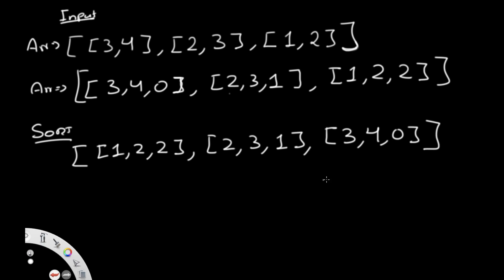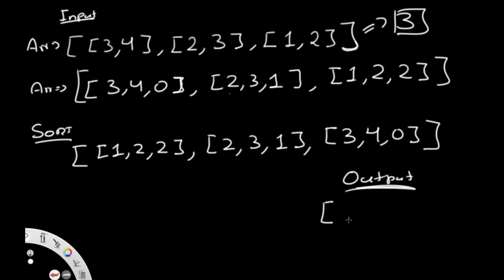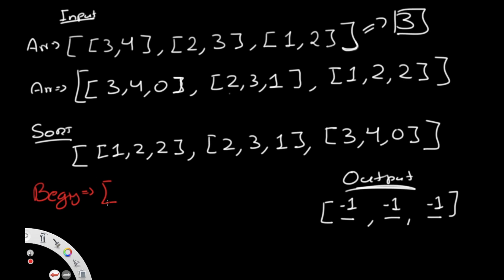We create two more arrays. The output array, called 'results', is initialized with all negative ones and has the same length as our intervals — three elements, each starting as negative one. We'll update these values as needed. We also create a 'beginning values' array that stores only the beginning (start) value from each element of the sorted array: [1, 2, 3].